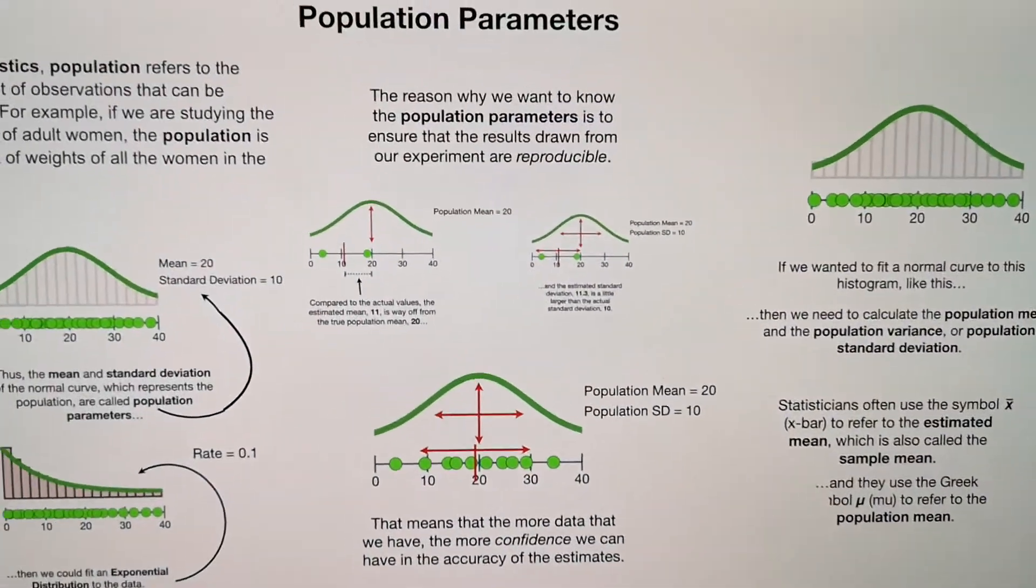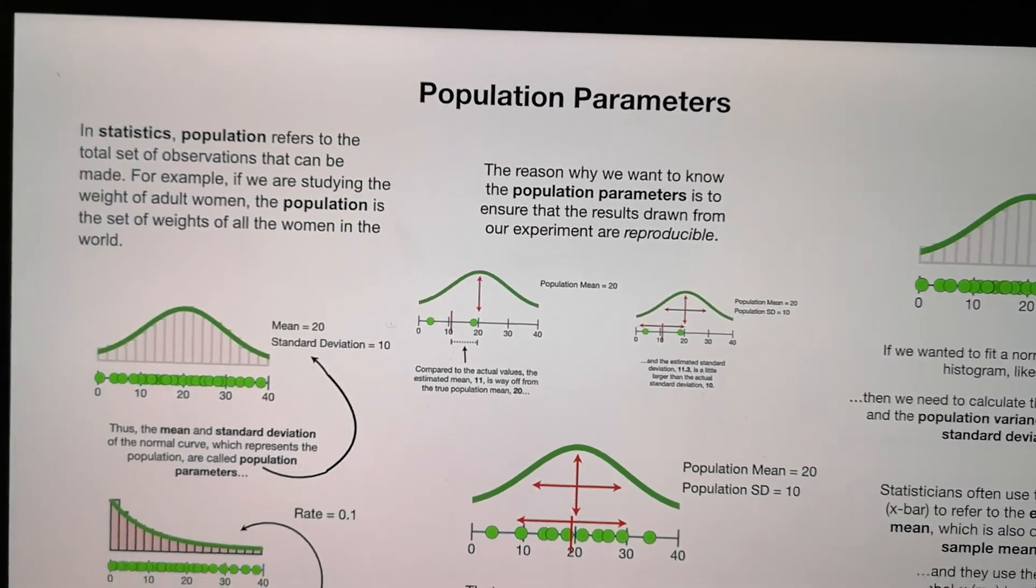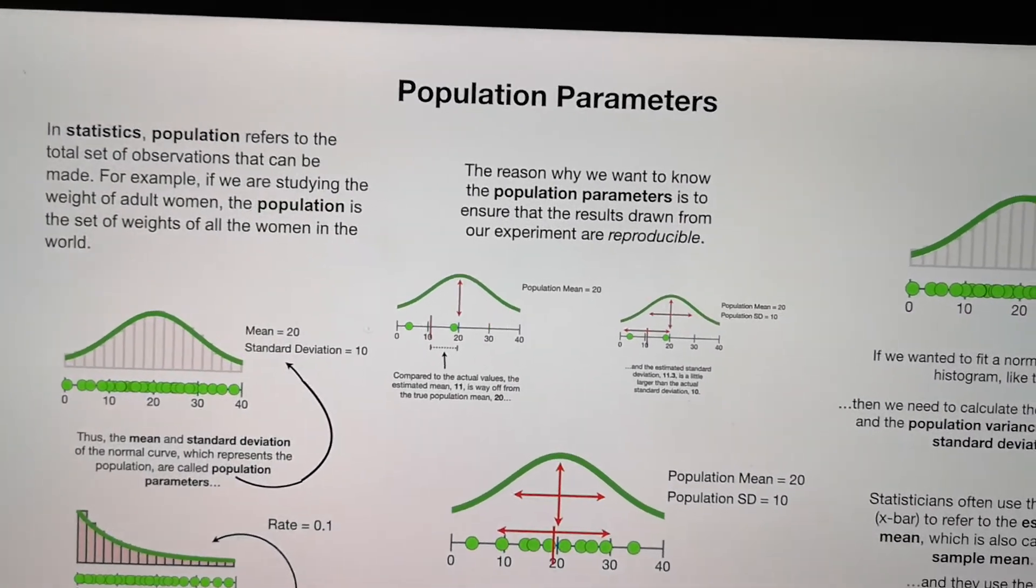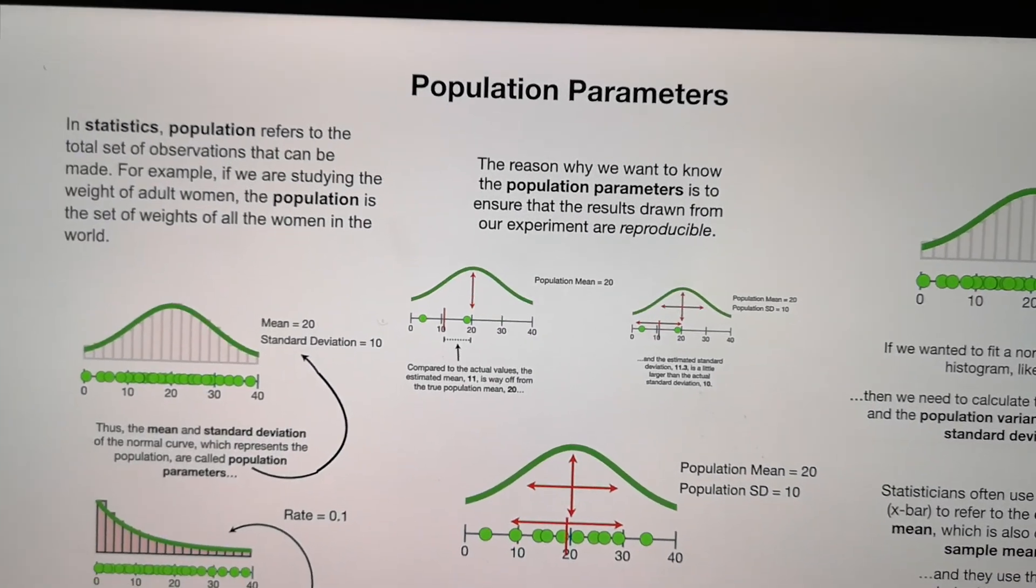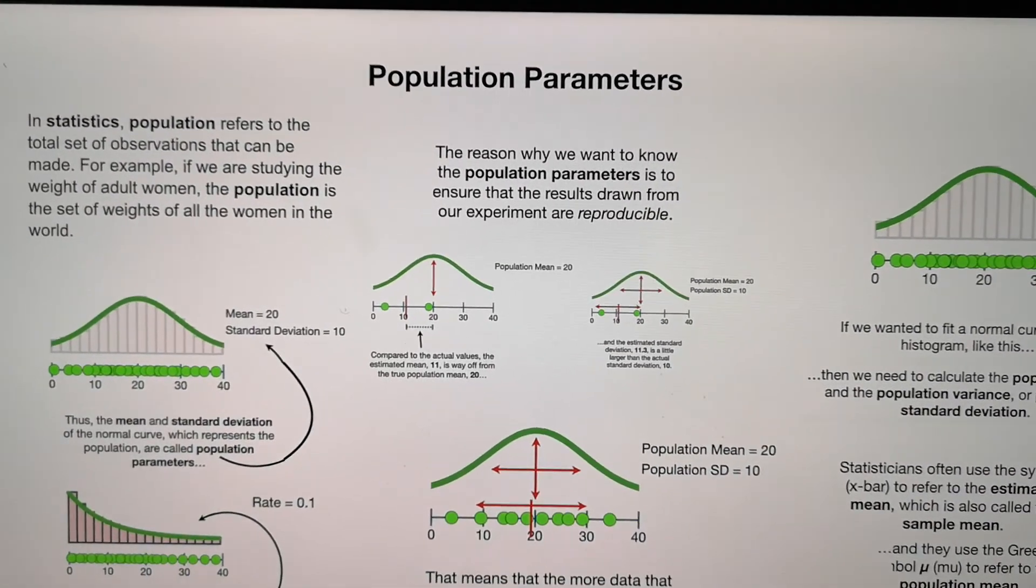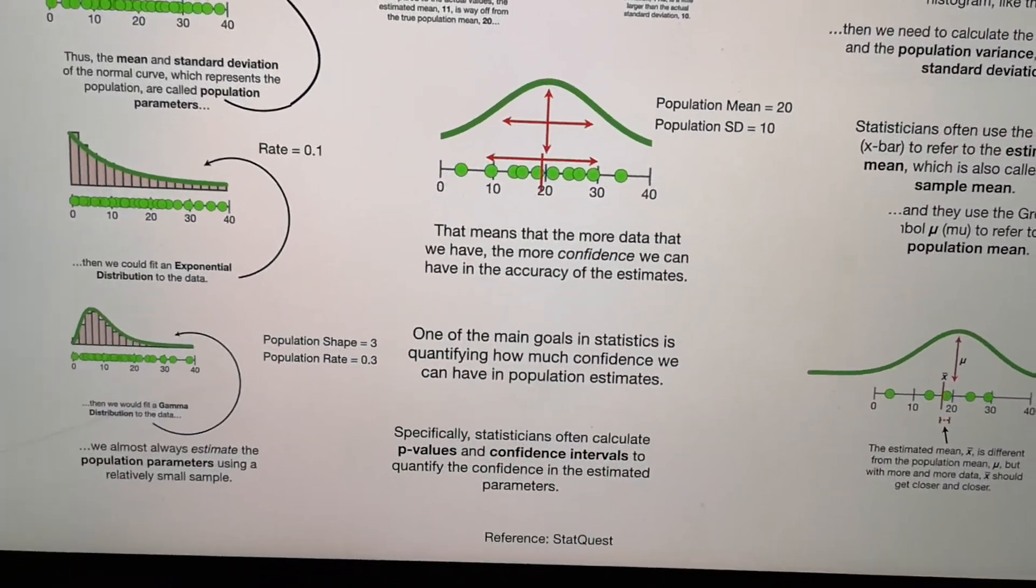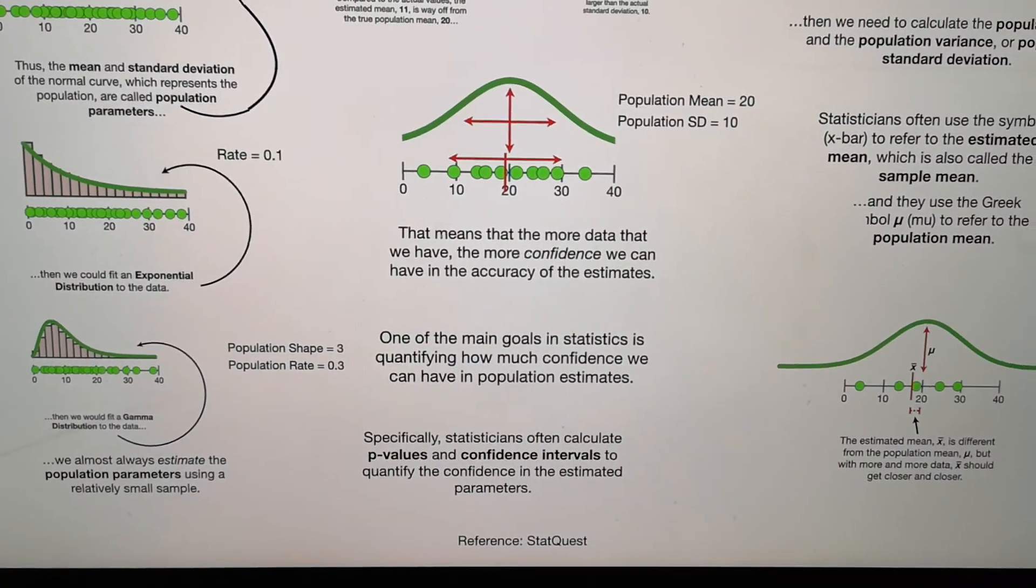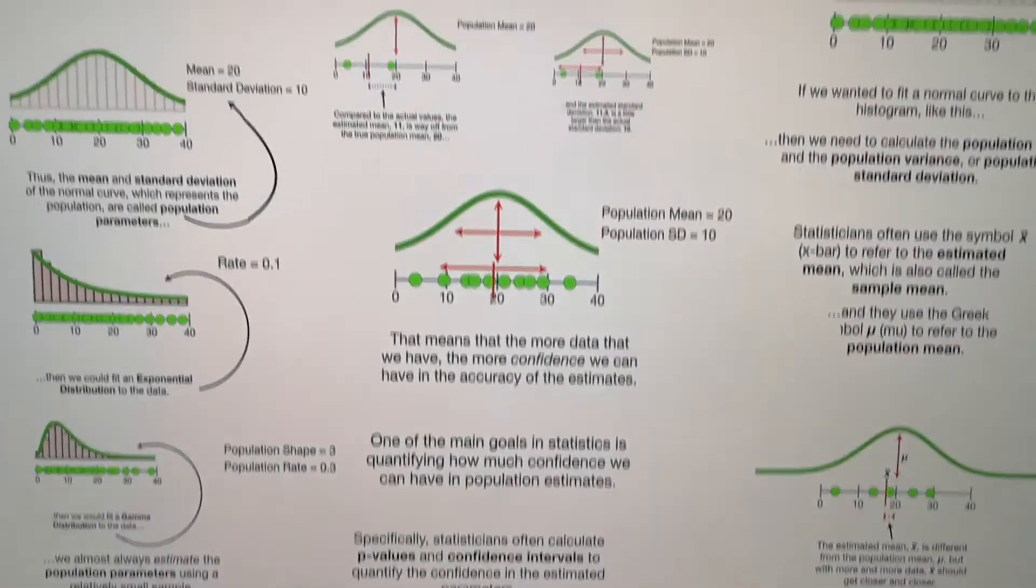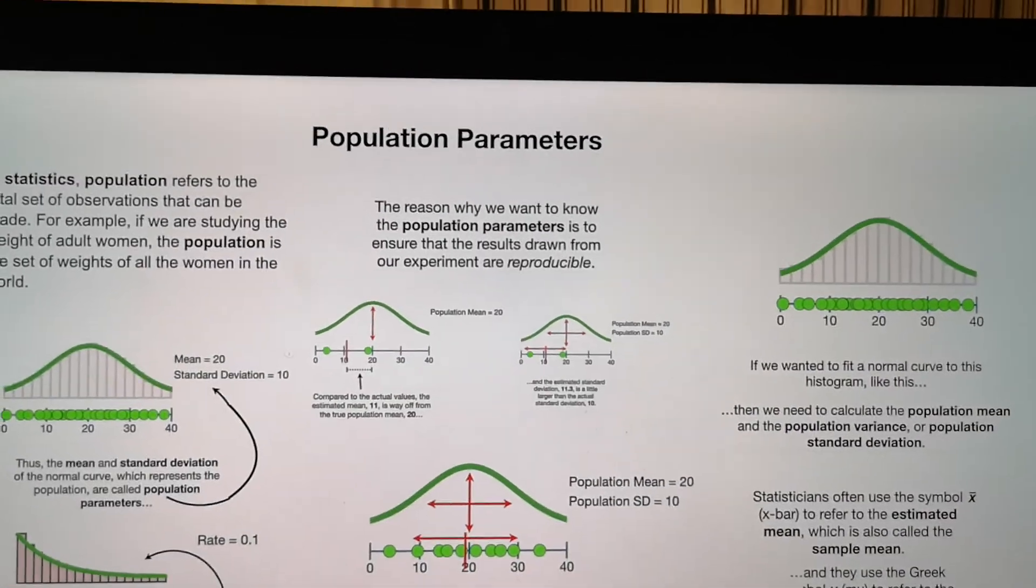So here is a summary of the population parameters. We know the population means all the set of the observations that can be made. And the parameters depend on the curve of the population, the distribution. You may need different parameters to do the estimation. And we need some kind of measurement to measure the confidence, how much we are confident about those parameters. Thanks for watching, population parameters. Bye.